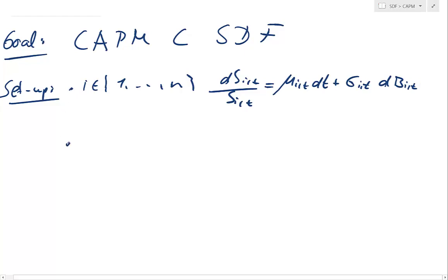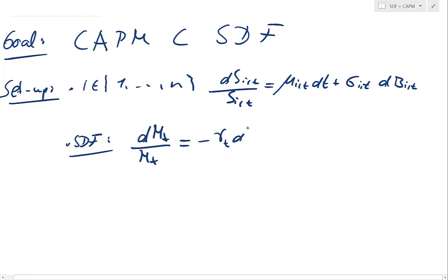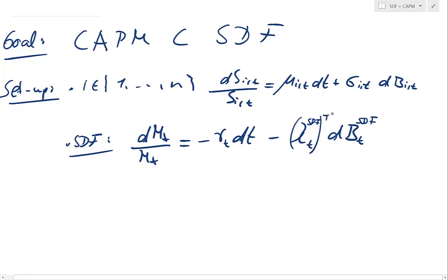We also assume that we have a stochastic discount factor. Using Brownian motion to make concepts clearer, I call that the SDF shock — that's the market price of risk for the SDF, the market prices of risk. That's the risk-free rate; that's the SDF.